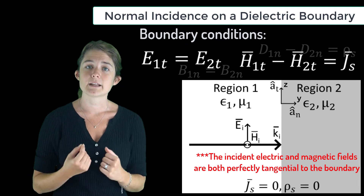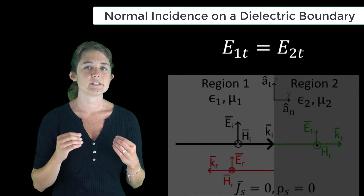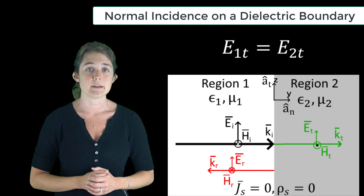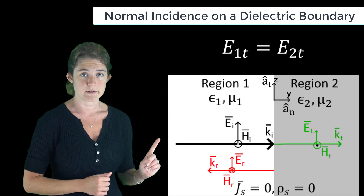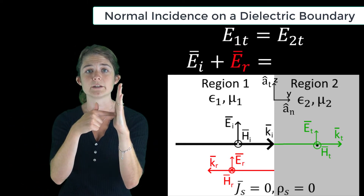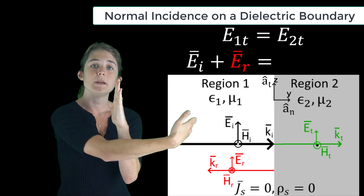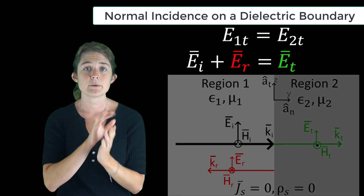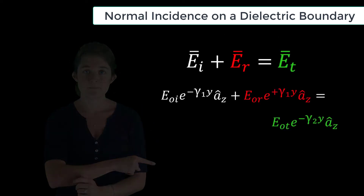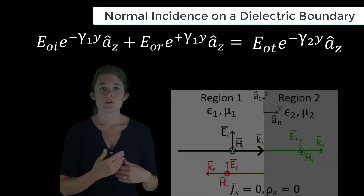Therefore, these are the relevant boundary conditions for this scenario. Let's consider this one first: the tangential electric field is the same on both sides of the boundary. This refers to the total electric field, so in the first medium the total electric field is the sum of the incident wave and the reflected wave, and in the second medium the total electric field is just the transmitted field.